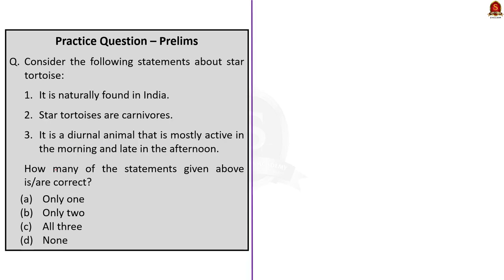Moving on to the next question. Three statements about star tortoise are given — we have to find how many are correct. Statement one: It is naturally found in India. This is correct — star tortoise is widely distributed in India, mainly inhabiting semi-desert grasslands and moist deciduous forests, and is also found in sand dunes, scrub forests, humid jungles, and even human-altered habitats. Statement two: Star tortoises are carnivorous. This is incorrect — they are actually herbivorous, feeding on fresh and leafy greens and grasses. Statement three: They are diurnal animals, mostly active in the morning and in the late afternoon. This is correct. So statements one and three are correct, and the correct answer is option B, only two.